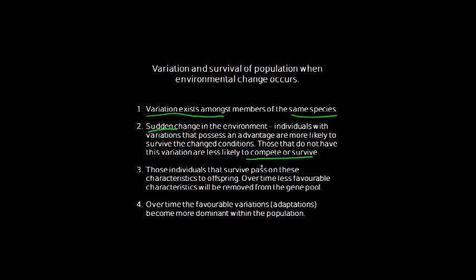Those individuals that survive pass on their characteristics to offspring through reproduction. Over time, less favourable characteristics will be removed from the gene pool. It's important to note that just because individuals with a favourable characteristic survive, they won't necessarily pass just that trait on — there is still some variation that will pop up from time to time, and if the environment were to change again, it's important that variation still exists. Finally, over time, the favourable variations, which we now call adaptations, become more dominant within the population.